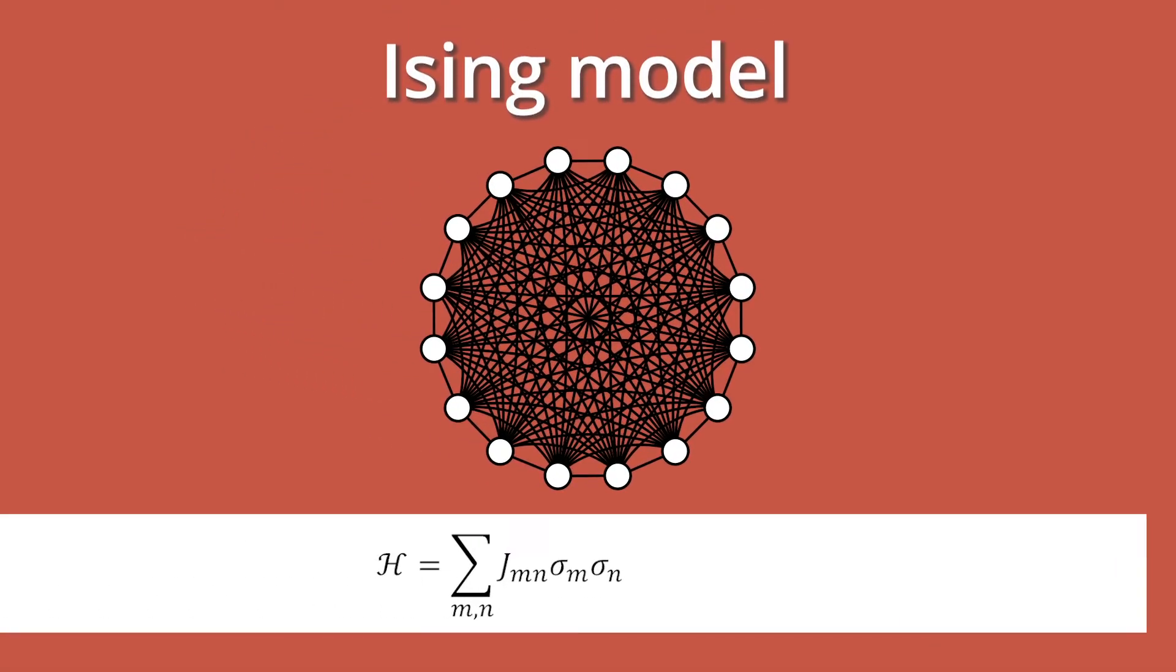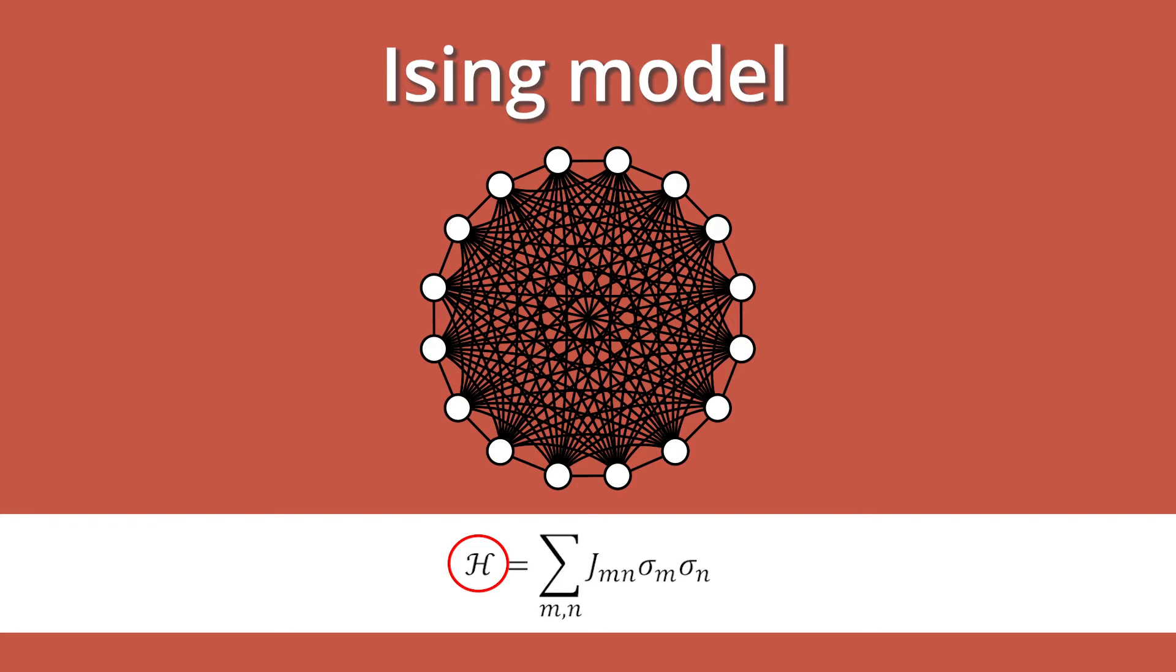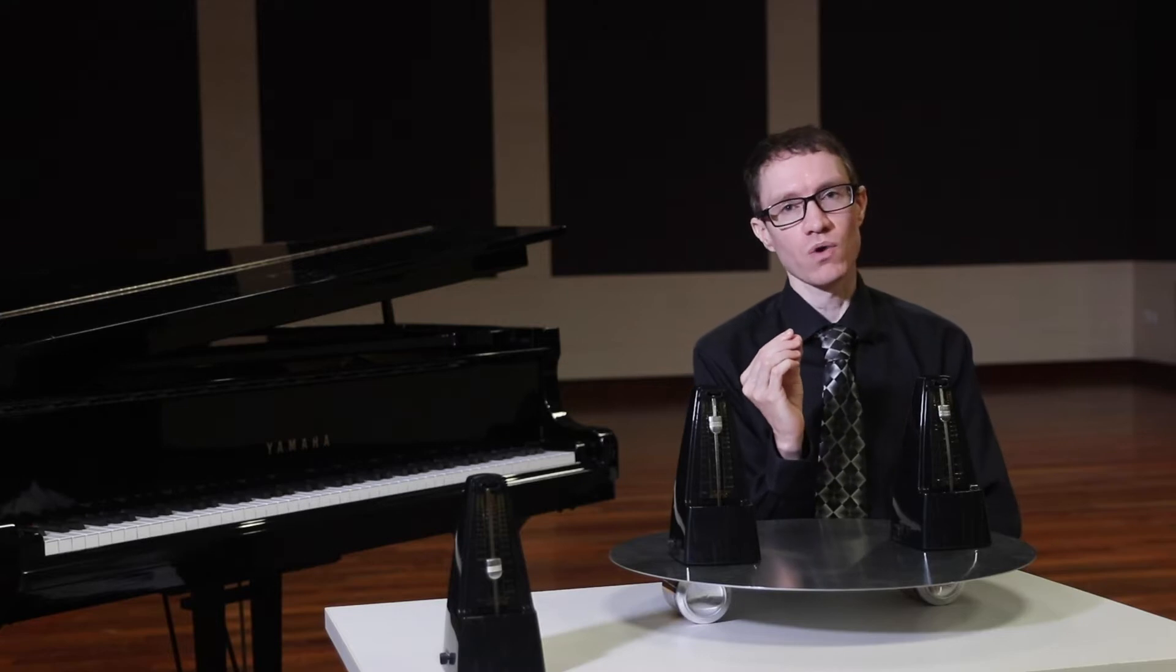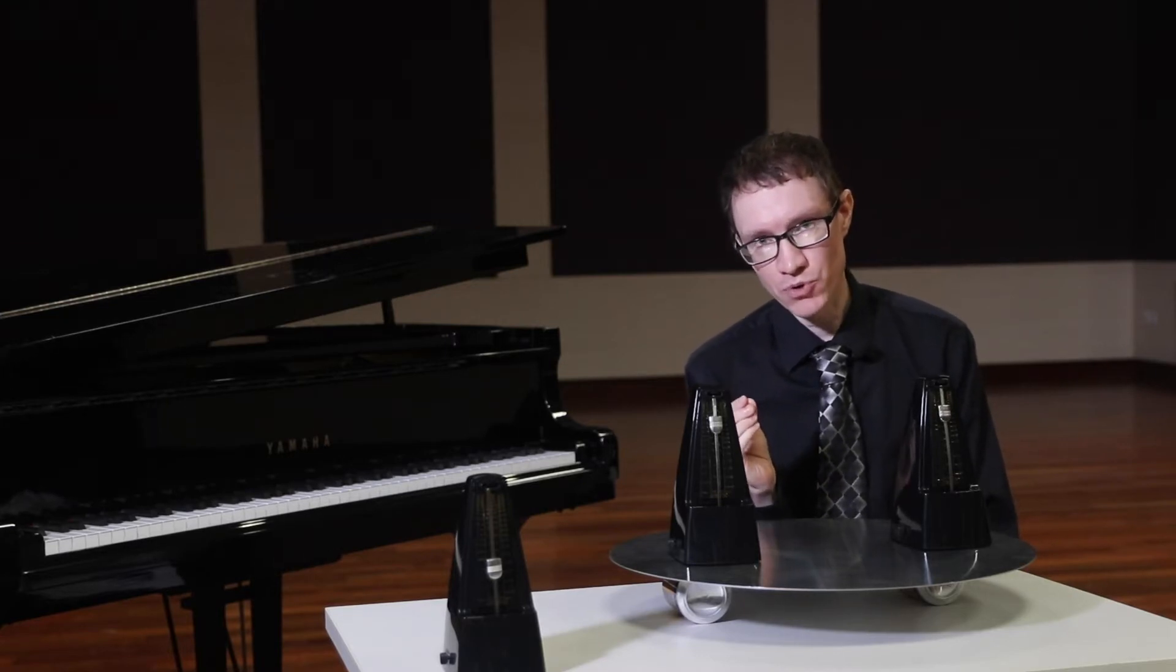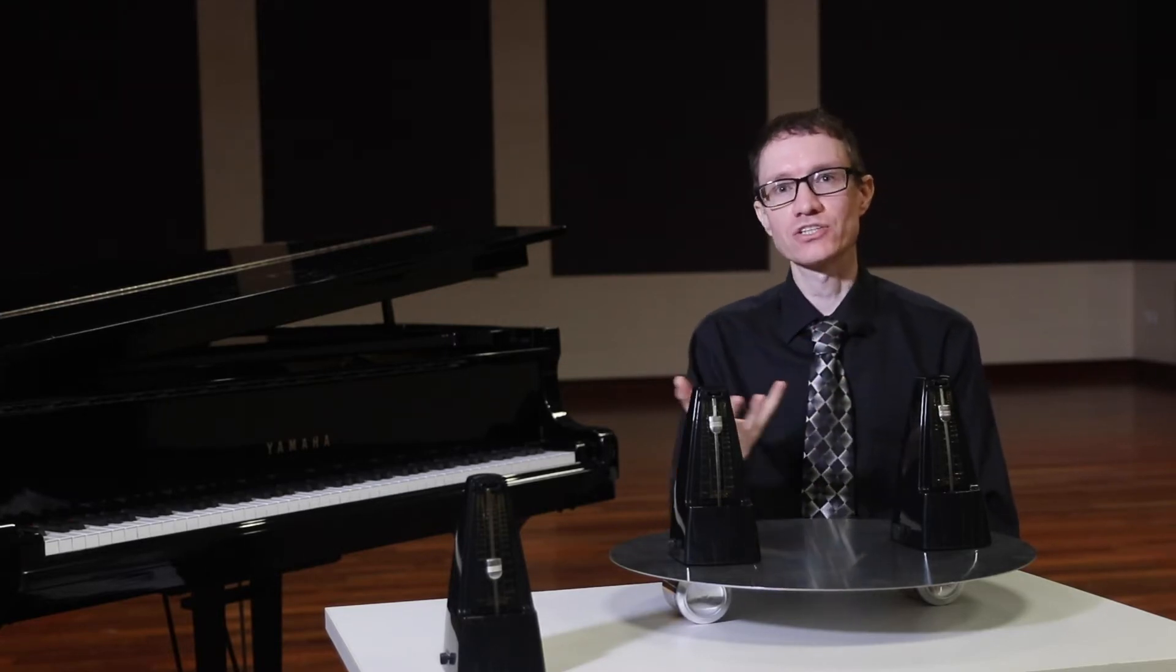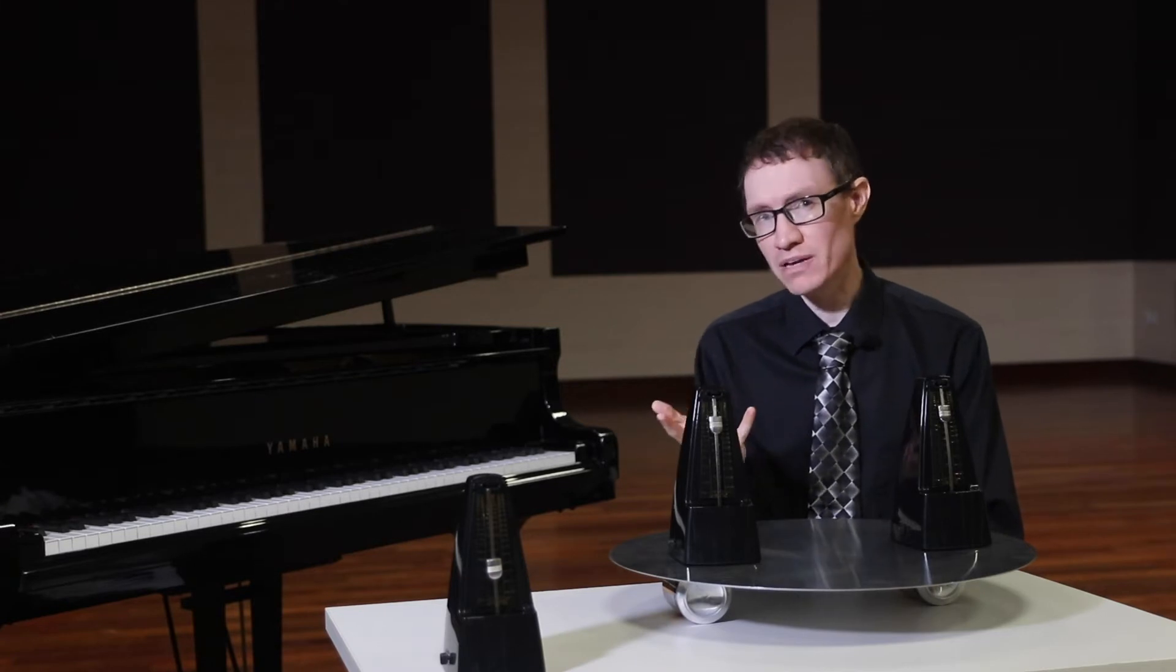In this equation, the H stands for the Hamiltonian. And the Hamiltonian of any physical system describes the dynamics of that system. In this situation, if you minimize the Hamiltonian, you minimize the total energy. So what we're looking for in an Ising computer is a natural system that can find the minimum energy state.